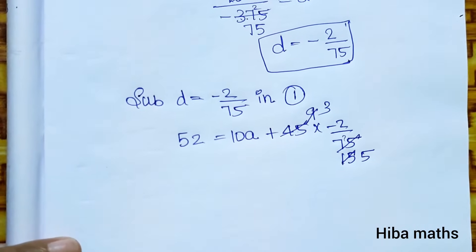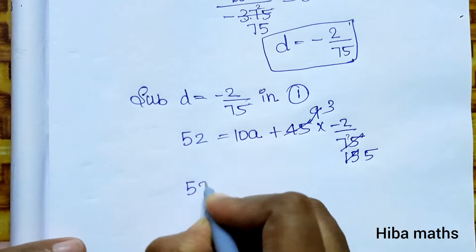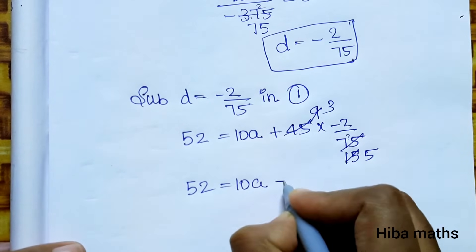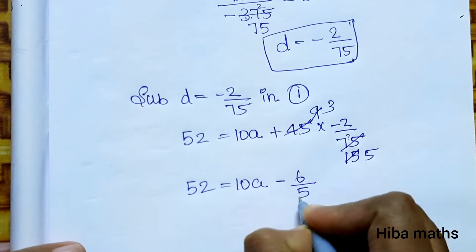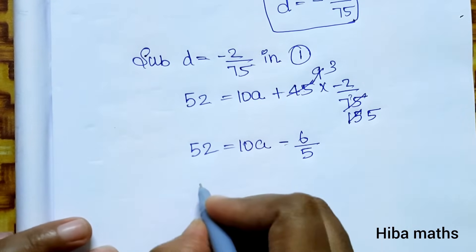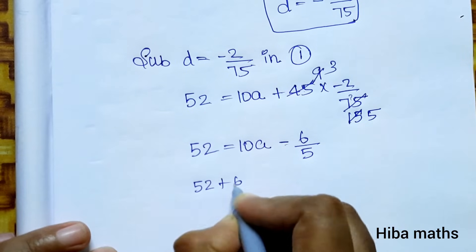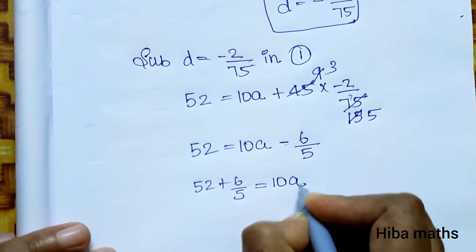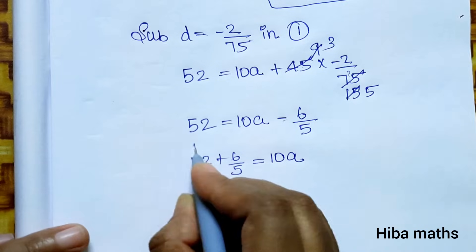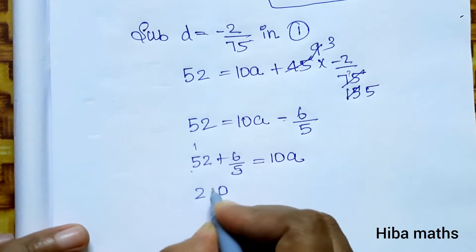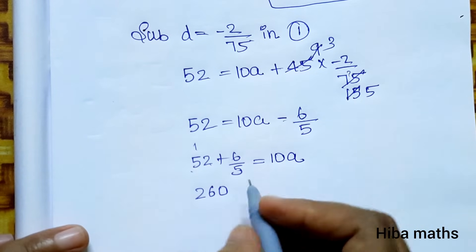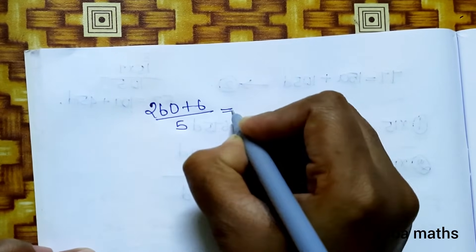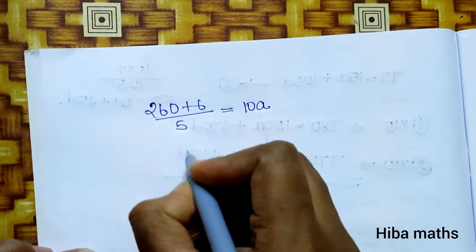Substituting back to find a: 52 is equal to 10a plus 45 into minus 2 by 75, which simplifies to 10a minus 6 by 5. Moving minus 6 by 5 to the other side: 52 plus 6 by 5 is equal to 10a. So 260 plus 6 divided by 5 equals 10a, giving 266 by 5 equals 10a.